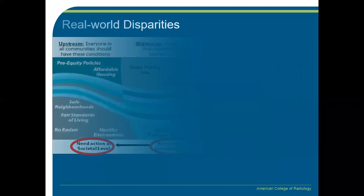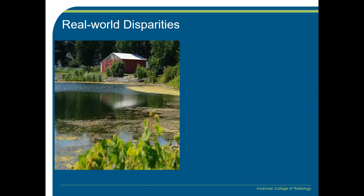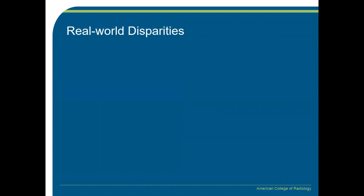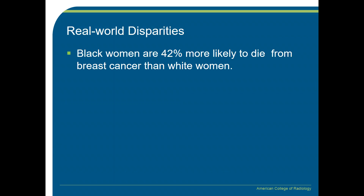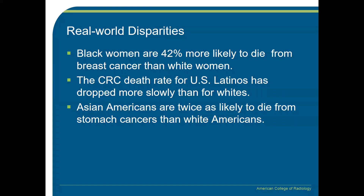Now I'm going to talk about real-world health disparities. 22% of those in rural areas live within 30 minutes of a lung cancer screening center versus 83% in urban areas. Black women are 42% more likely to die from breast cancer than white women. The colorectal cancer death rate for US Latinos has dropped more slowly than for white Americans. Asian Americans are twice as likely to die from stomach cancers than white Americans. These stats support the fact that steps must be taken to improve health outcomes for medically underserved populations.